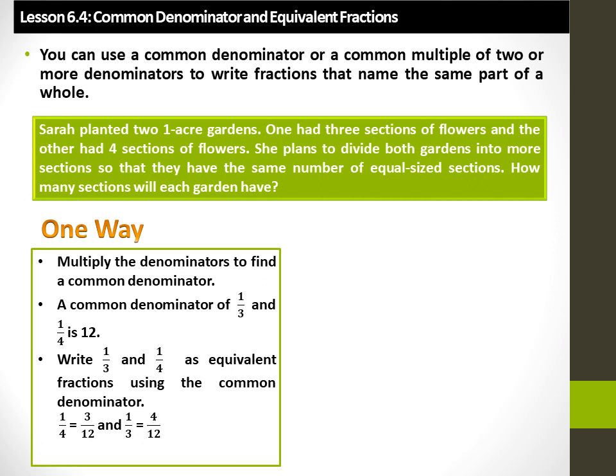One way to find a common denominator is to multiply the denominators: 3 times 4 is equal to 12. So a common denominator of 1 over 3 and 1 over 4 is 12. To write 1 over 3 as an equivalent fraction with a denominator of 12, multiply the numerator and denominator by 4: 1 over 3 is equal to 4 over 12. To write 1 over 4 as an equivalent fraction with a denominator of 12, multiply the numerator and denominator by 3: 1 over 4 is equal to 3 over 12.